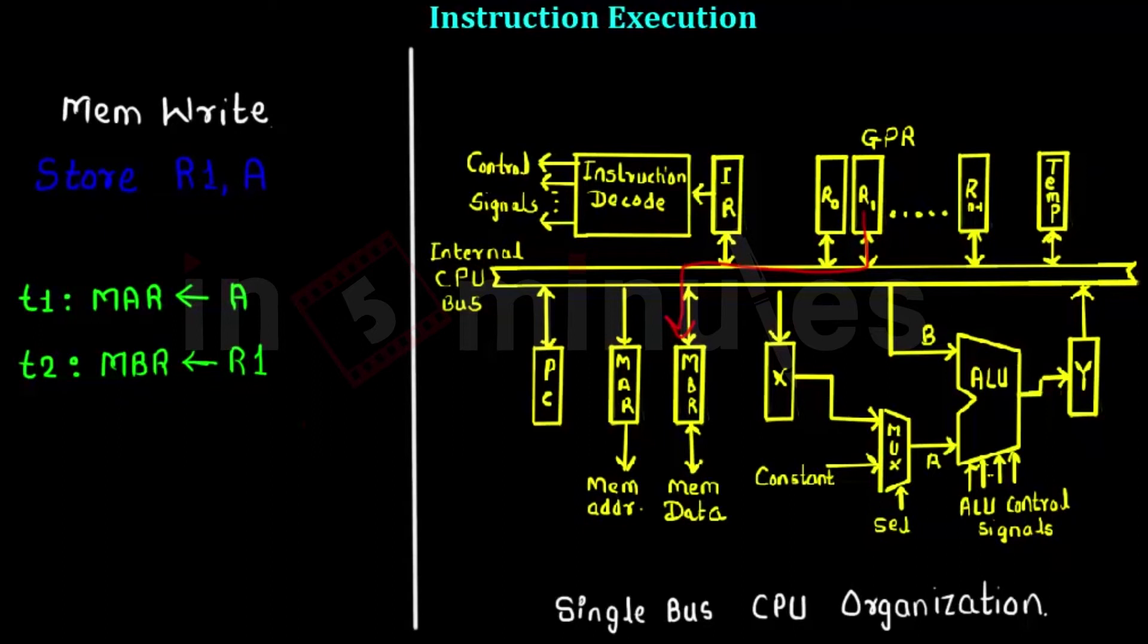And appropriate write commands are given to the memory. In the third t-state, the appropriate memory location is written from the data that is specified. So we have seen the different execution steps in the instruction.